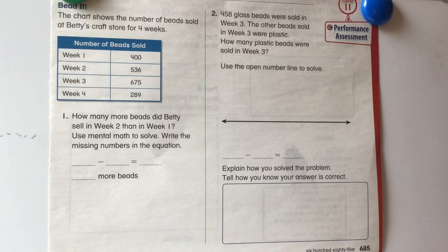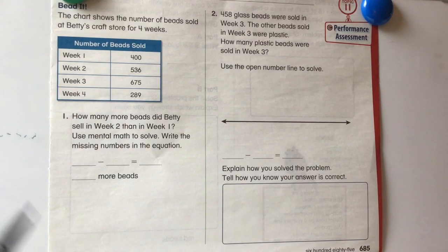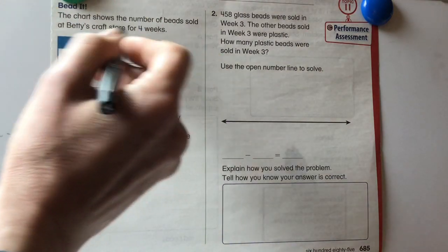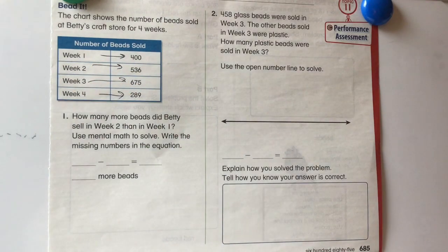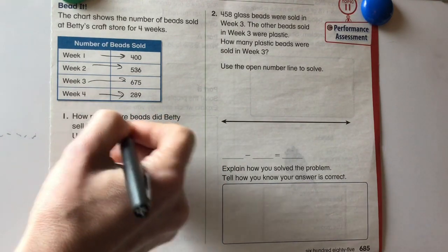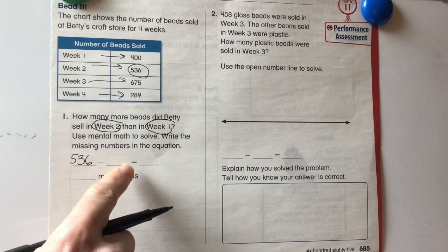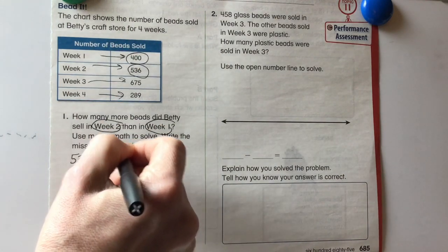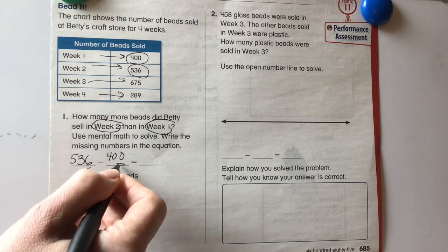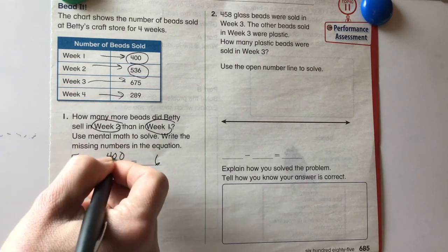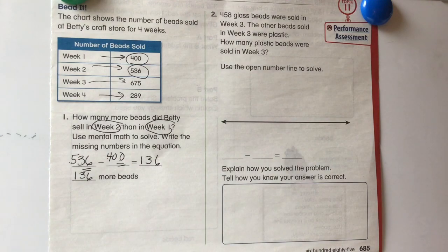Okay, let's take a look over here at our next. This is our topic 11 performance assessment for second grade. These are a little bit trickier because there are a lot of word problems. So we're going to go through and kind of do this together. The chart shows the number of beads sold at Betty's craft store for four weeks. So week one, it tells us how many beads. Week two, week three, and week four. How many more beads did Betty sell in week two than in week one? So week two, we have 536. So 536 minus week one was 400.